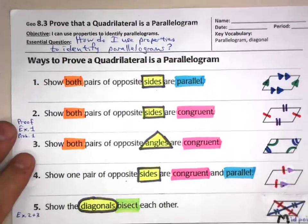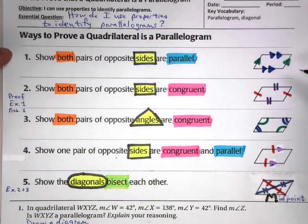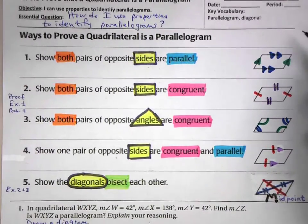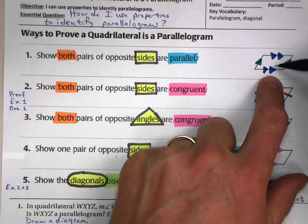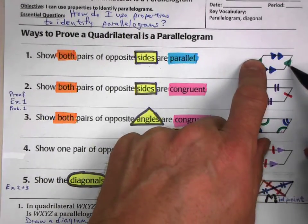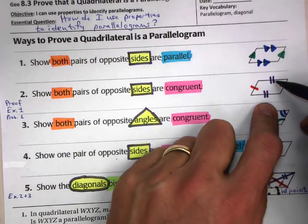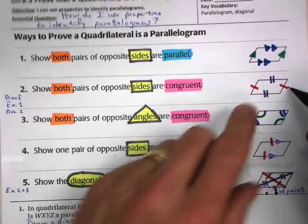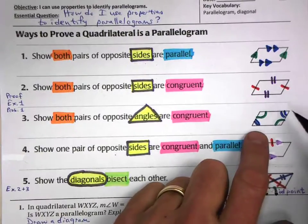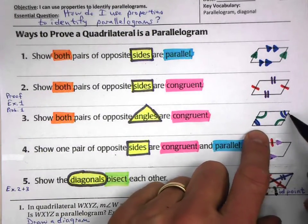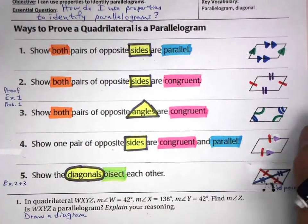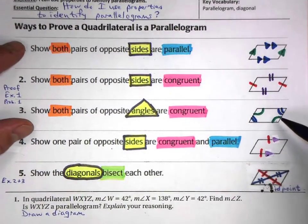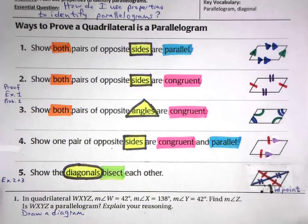So we have three different ways to prove that a quadrilateral is a parallelogram: one, by having both pairs of opposite sides being parallel; or if both pairs of opposite sides are congruent, that's sufficient; or if both pairs of opposite angles are congruent — any one of those is sufficient to prove that a quadrilateral is a parallelogram.